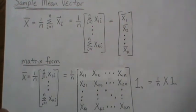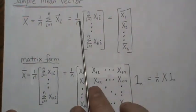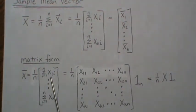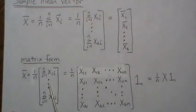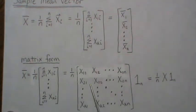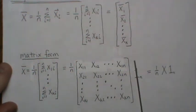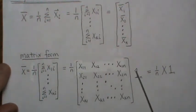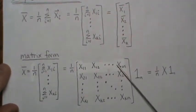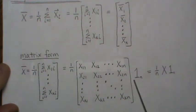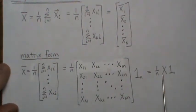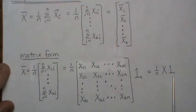Now we're going to write this in matrix form. So we have x-bar, which is this matrix. This says add up each of the first components, add up the second components, add up the kth components. And so if we represent it like this, where this is the data matrix and this is an n by 1 vector of 1s, to get this number you take this row times this. So the sample mean vector can be thought of as 1 over n times the data matrix times a column vector of 1s.